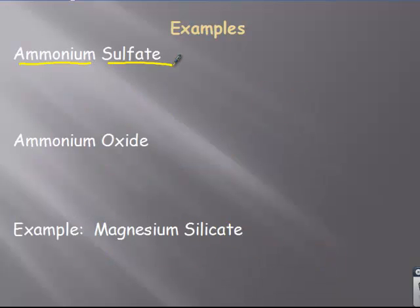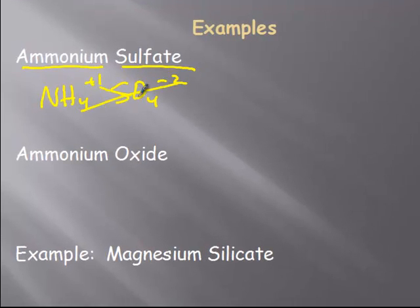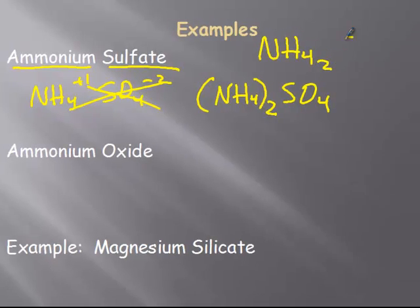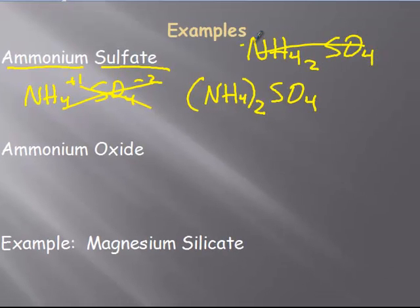All right, ammonium sulfate. NH4 with a plus one. SO4 with a minus two. So, the two goes that way. The one goes that way. Well, that is a polyatomic ion. So, I have to show that I have two ammoniums. If I forget the parentheses, I would get something like that, which, you know, doesn't make any sense. You don't know where the two goes. Does it go to the hydrogen? Is it 42 hydrogens? You have to have a polyatomic ion around that.